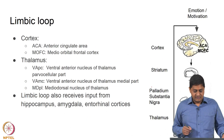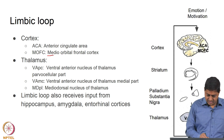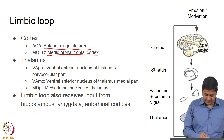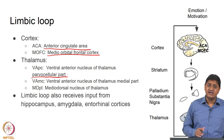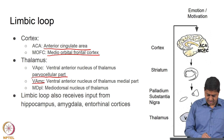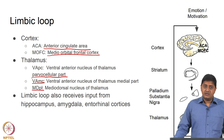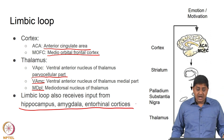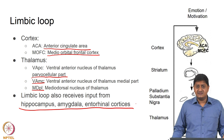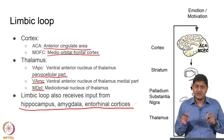The limbic loop receives inputs from the medial orbital frontal cortex and the anterior cingulate area. In the thalamus, outputs go through the parvocellular part of the ventral anterior nucleus and the mediodorsal part of the thalamus. Importantly, the limbic loop also receives inputs from the amygdala, hippocampus, and entorhinal cortices — in other words, from the emotional brain. The amygdala performs much of the emotional brain's function, and a lot of emotion-related processing is performed by this so-called emotional brain.